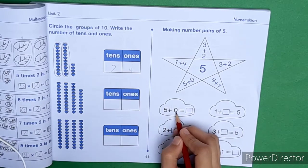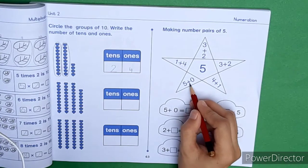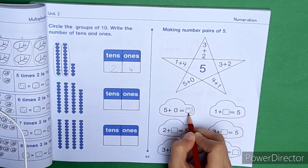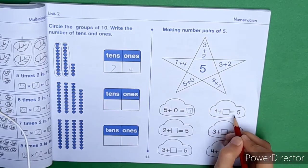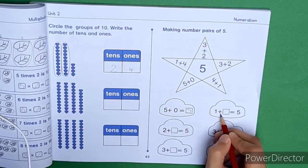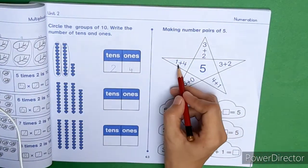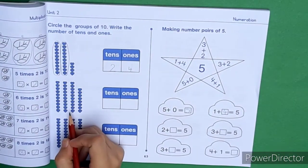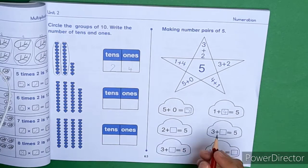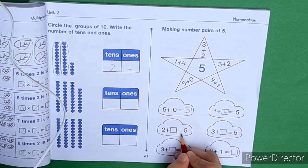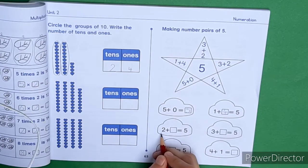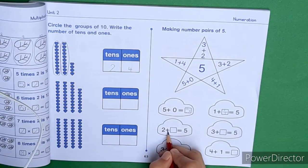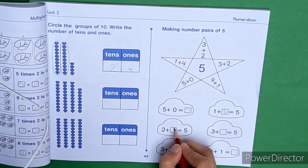5 plus 0. We have to read it: 5 plus 0 is equal 5. Here we will write 5. 1 plus dash is equal 5. 1 plus 4 is equal 5. 2 plus dash is equal 5. 2 plus 3 is equal 5.